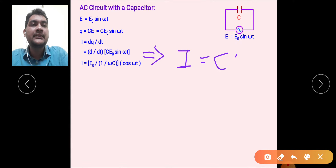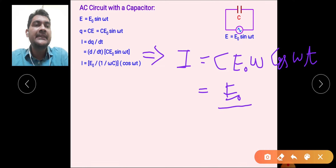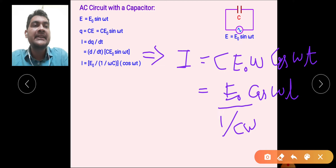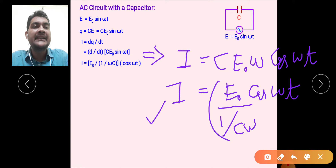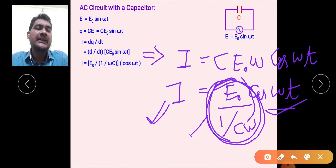We obtain i = Ce₀ω cos(ωt). This can be rewritten as i = [e₀ / (1/Cω)] cos(ωt). Since cos(ωt) is dimensionless, the quantity e₀/(1/Cω) must have the dimensions of current. We write this as i₀ cos(ωt), where i₀ is the peak current equal to e₀ divided by 1/Cω.